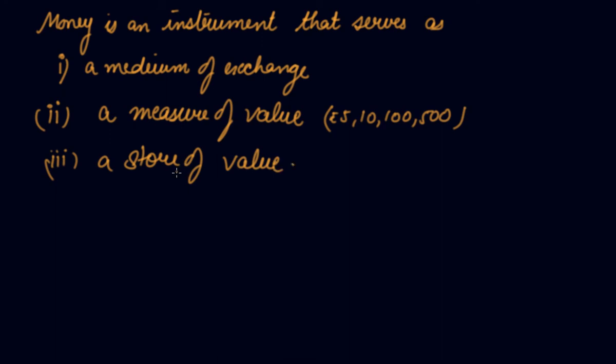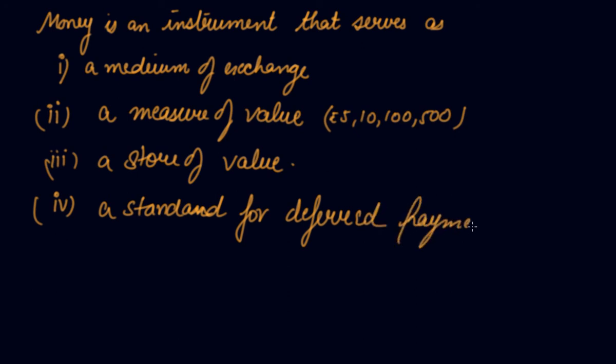Third, a store of value. You can store your money with you. You can store it in the bank system, deposits, fixed deposits. A standard for deferred payment. What do you mean by deferred? Which means an outstanding. So money gives you an option to have an outstanding payment, and that payment you can give in the future, such as loans. You take loans now, you use it, but you repay the loans in future. So that is the standard for deferred payment.